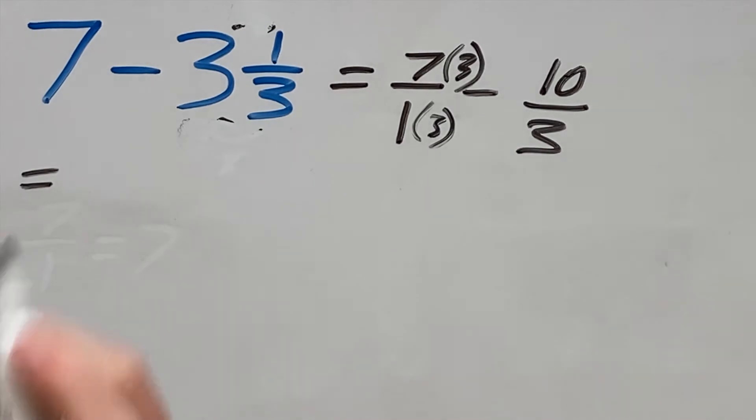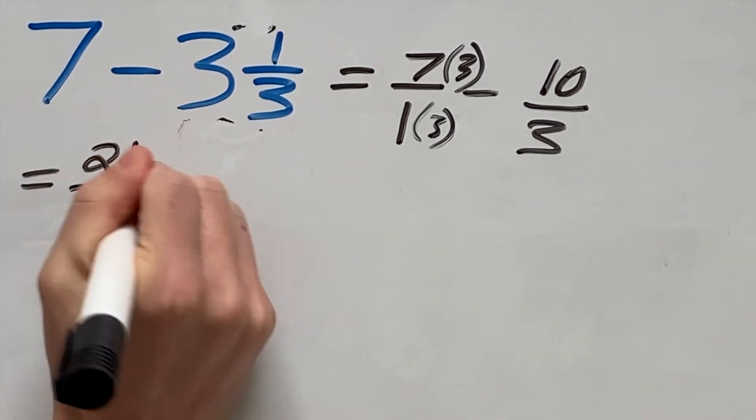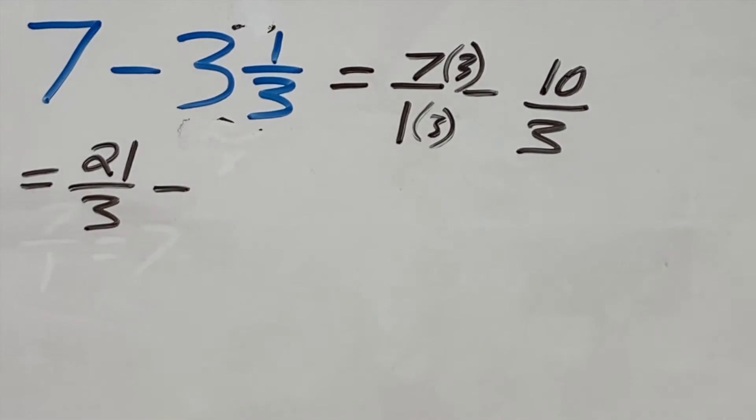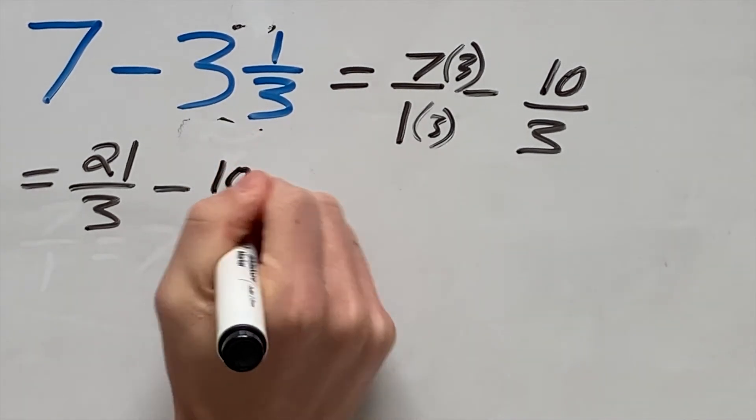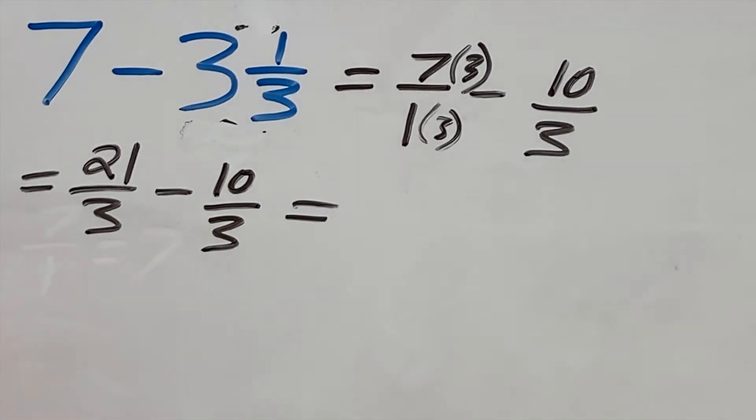And that gives us a new problem of 21 over 3 minus 10 over 3. Since 10 over 3 already has our least common denominator of 3, it can just stay the same. And now we just have a normal subtraction problem with a fraction subtracted by a fraction.